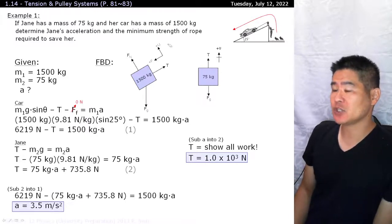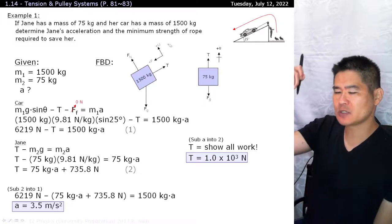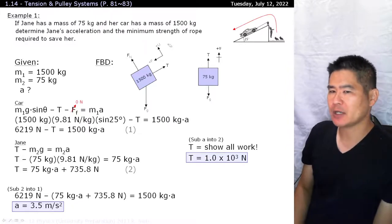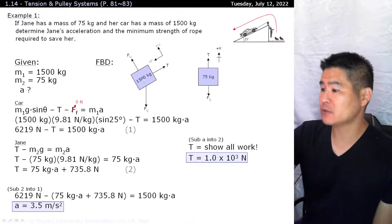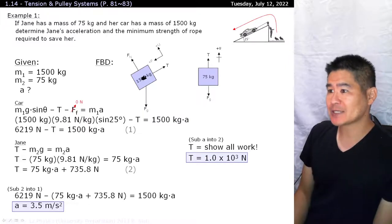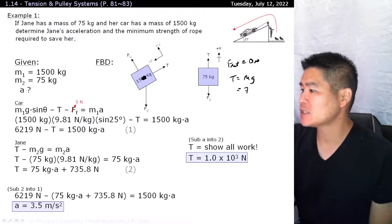Because if the car was just bolted to the ground, then the tension on it would just be Jane's weight, which is 75 times 9.81, which is around 750 newtons as opposed to 1000. But because the system's accelerating in Jane's favor, the tension on the rope is greater. On the other hand, if the car wasn't heavy enough and Jane was accelerating downwards, the tension will be less than around 750 newtons.